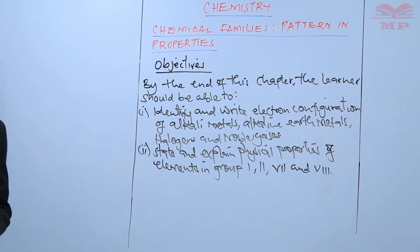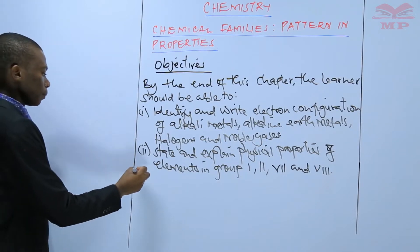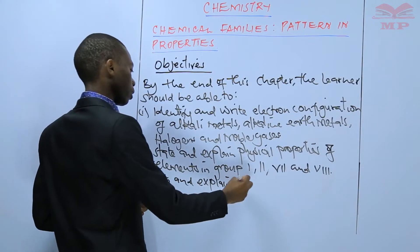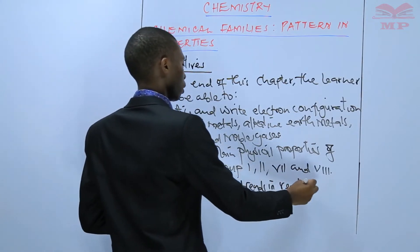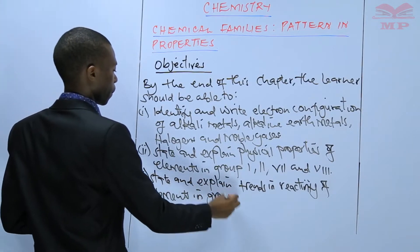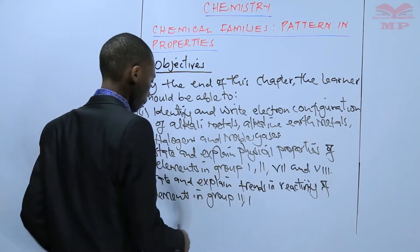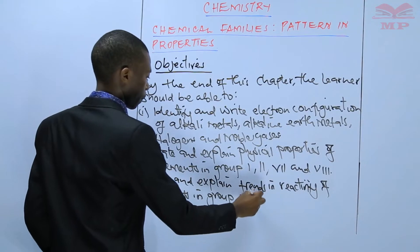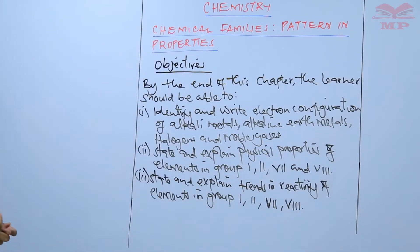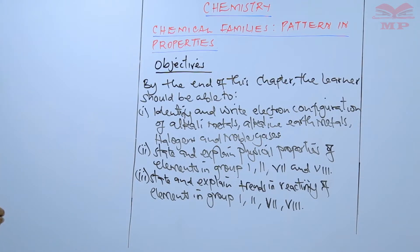The third objective: you should be able to state and explain trends in reactivity of elements in group 1, 2, 7, and 8. The next objective: you should be able to explain the similarities in chemical formula of compounds of elements in a group.